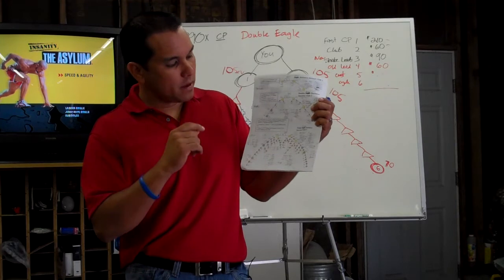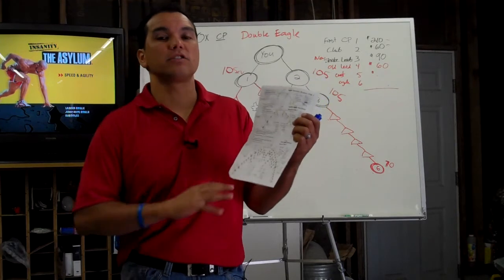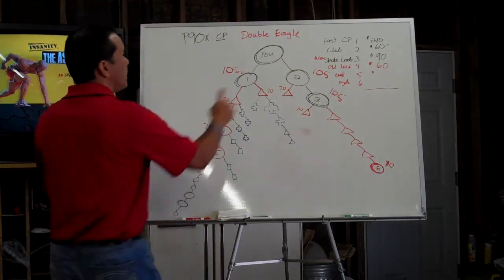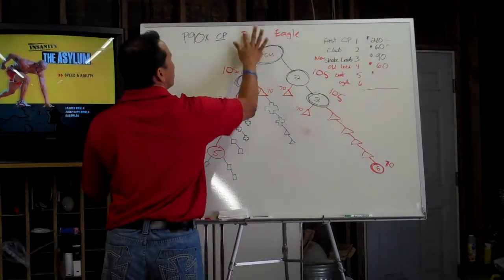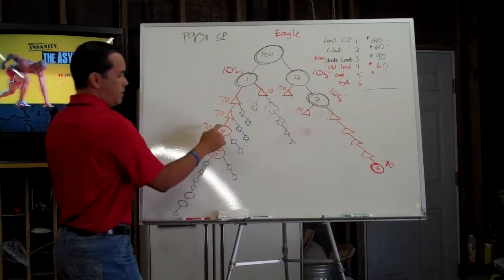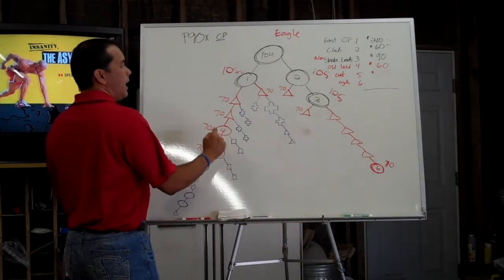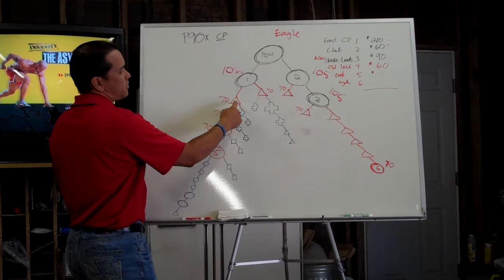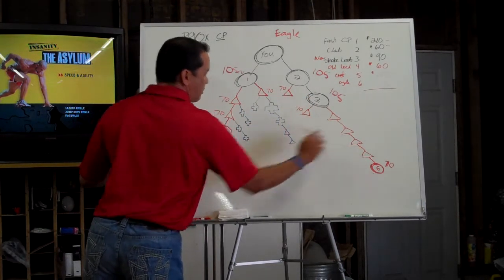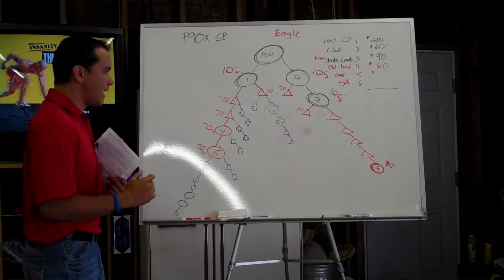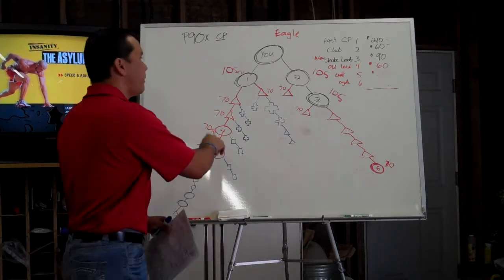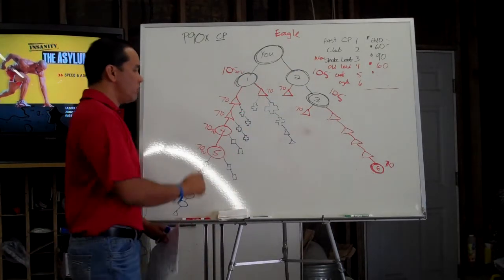The triple eagle business is where you start seeing the exponential growth. Do you remember a double eagle? A double eagle was you sponsoring one, two, three, four, five, six, and then your one, two, and three sponsored one, two, and three each. Now a triple eagle is taking that to the next step. You're helping all 15 of your original, the red and the blacks, sponsor three people.